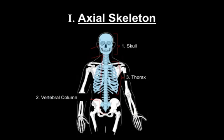The axial skeleton has three divisions itself. We start with the skull, the vertebral column, and then the thorax, otherwise known as the ribcage.